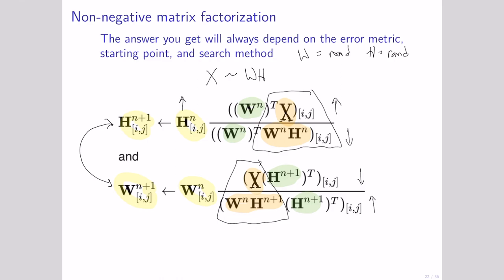This only applies for the Frobenius norm, which is equivalent to the sum of squared error. If you had another error metric, you'd end up with a different method for fitting. Given this definition of error, we initialize using some method — we can use random values — and then this process will lead to a local fitting. It'll give us a better fit, but it won't necessarily give us the absolute best fit.